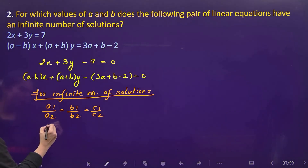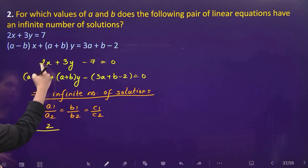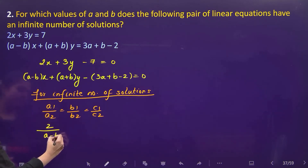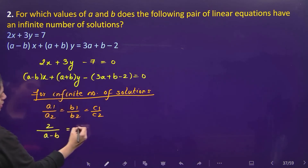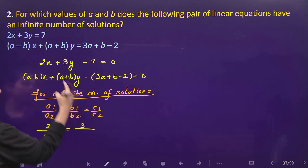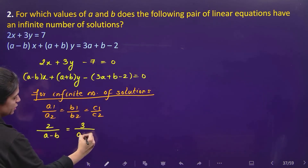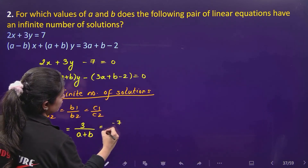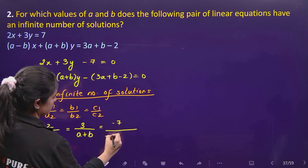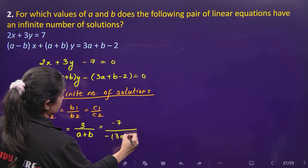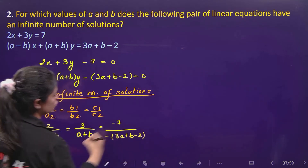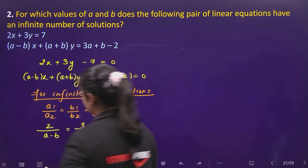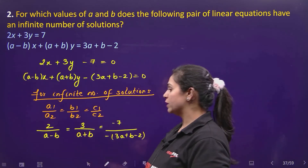Substituting the values: a1 is 2, a2 is (a − b), b1 is 3, b2 is (a + b), c1 is minus 7, and c2 is minus (3a + b − 2). This gives us: 2 over (a − b) equals 3 over (a + b) equals 7 over (3a + b − 2).